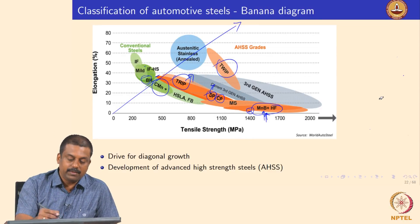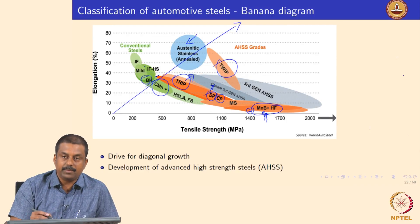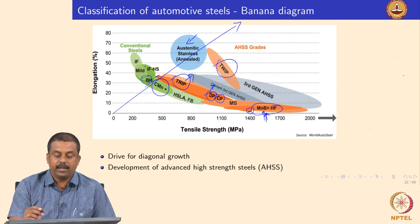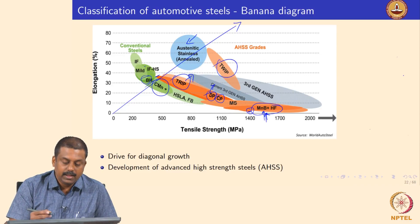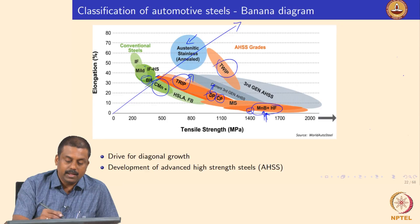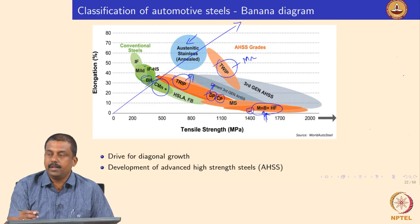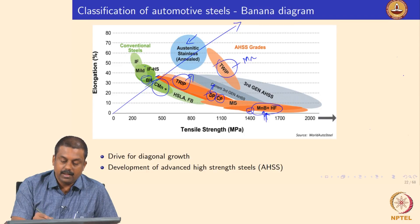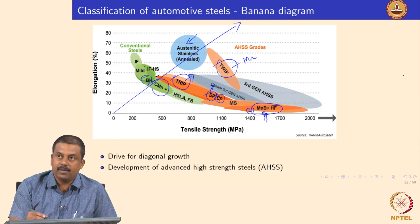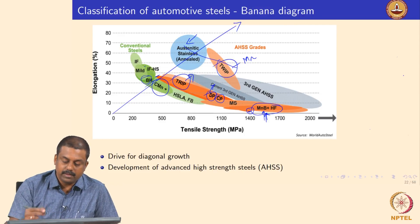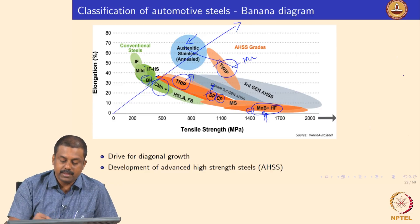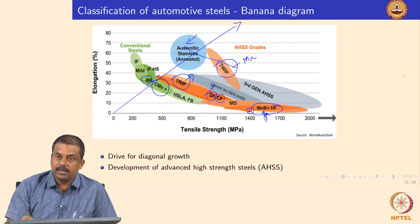Fully austenitic and TWIP steels are very expensive in terms of alloying elements — forming a complete austenitic microstructure requires adding nickel and chromium. TWIP steels also contain high amounts of manganese and have poor weldability with conventional welding processes. Therefore we will not look at these two steel types in detail. In subsequent classes we will look at the physical metallurgy of the first and second generation advanced high strength steels, and the hot forming and fully martensitic steels which have very high strength upon forming.